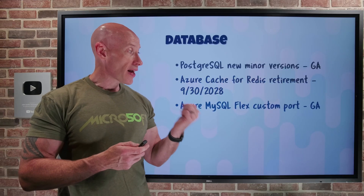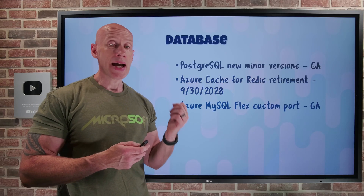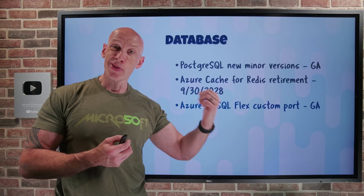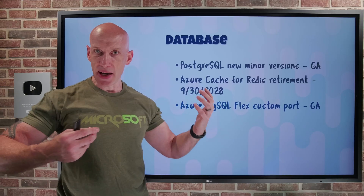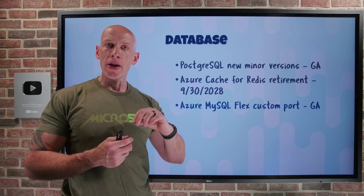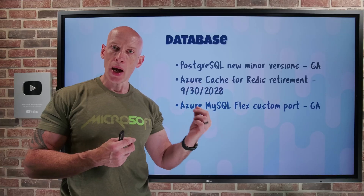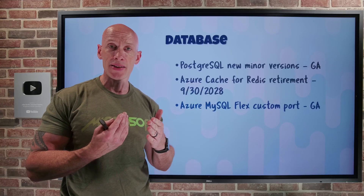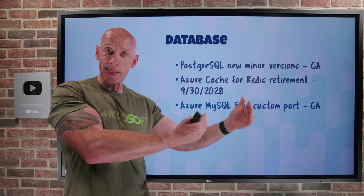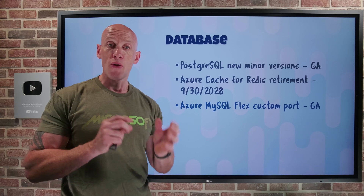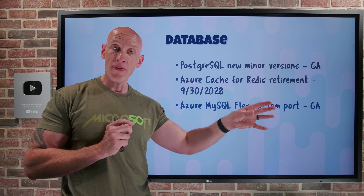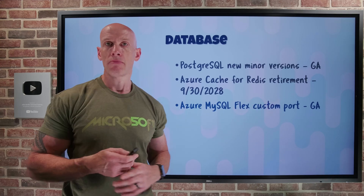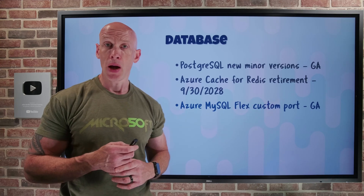Azure MySQL Flexible now has a custom port in GA. Normally it's port 3306 by default, but now during creation you can pick a custom port from 25,001 to 26,000, which will be used for both public and private. You can only have one custom port, but you can change it if you want to.